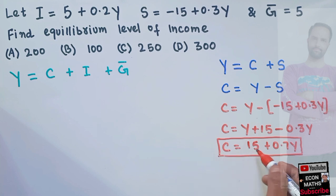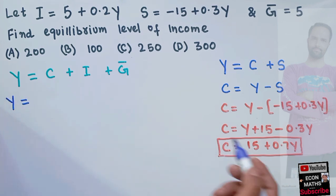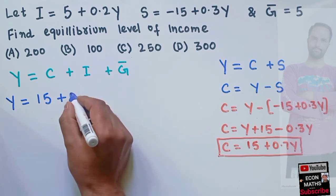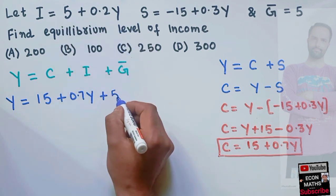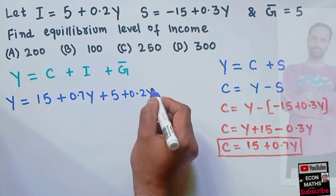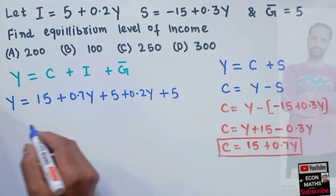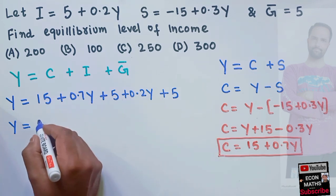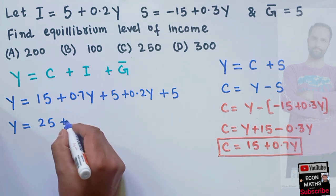Consumption is a positive function of income and this 15 denotes the autonomous consumption when income is 0. Now we can use our identity: Y is equal to consumption function 15 plus 0.7Y, plus investment 5 plus 0.2Y, plus government spending which is autonomous and equals 5. This gives us Y equal to 25 plus 0.9Y.